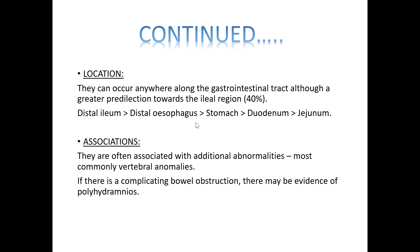Fetal enteric duplication cysts can occur anywhere along the gastrointestinal tract, although there is greater predilection towards the ileal region. Common sites include distal ileum, followed by distal esophagus, stomach, duodenum, and jejunum. They are often associated with additional abnormalities, most commonly vertebral anomalies. If there is a complicating bowel obstruction, there may be evidence of polyhydramnios.